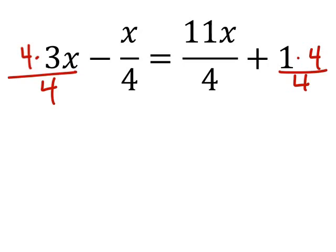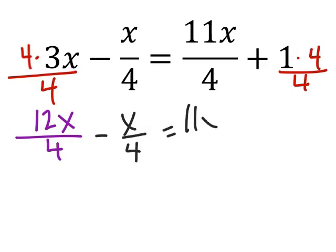Then we can rewrite this. We have 12x over 4 minus x over 4 equals 11x over 4 plus 4 over 4. So now that we have these common denominators we can get rid of them.